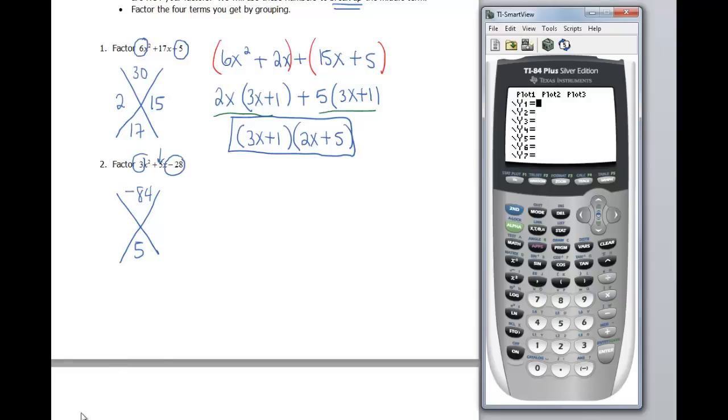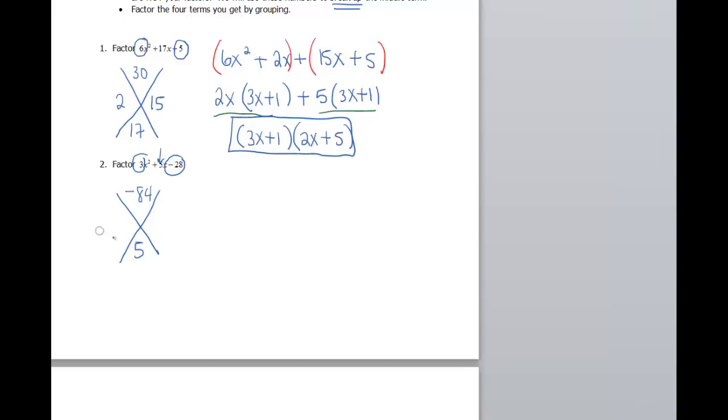Let me bring up the calculator and show you how we can use this. In my y equals, I'm going to type negative 84 and divide that by x. When I look at my table, I'm probably going to have to scroll around. I need two numbers that will add to 5. I'm going to want the bigger number to be positive. If I add 7 and negative 12, that gives me a negative 5. If I flip those signs, I should be safe.